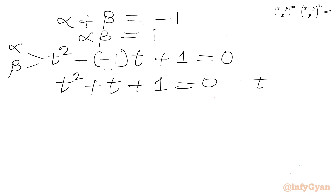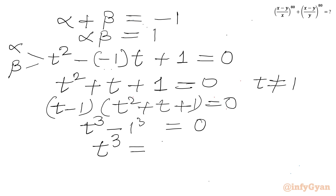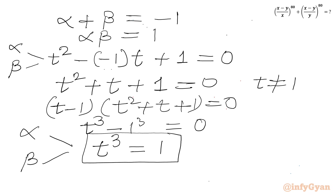If we plug in t = 1, we get 1 + 1 + 1 = 3 ≠ 0, so t = 1 is not a root. Multiplying both sides by (t minus 1), the left side gives t³ minus 1 = 0, so t³ = 1. This is a very important result. Since α and β are roots of t² + t + 1 = 0, plugging in gives α³ = 1 and β³ = 1.